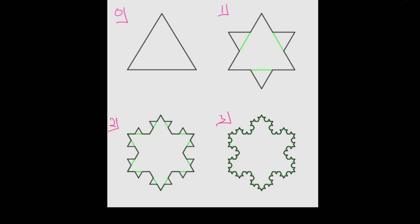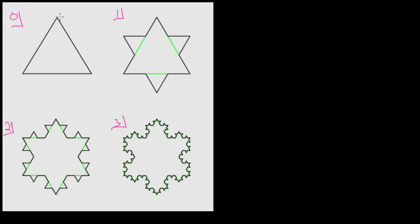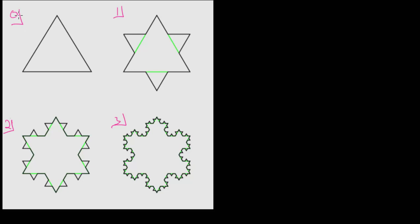Now that we understand the process of creating the Koch snowflake, let's talk about how to calculate the perimeter. Remember that the perimeter of an object is just the length around the outside of the object. It's easiest to think of this step by step. If we start with step 0, we can call that P0, the perimeter at step 0. If we call each side length S, the important thing is that each of these sides are equal. We find the perimeter by adding them together: S plus S plus S, which is just three times that side length.